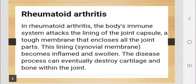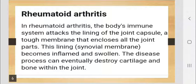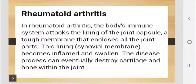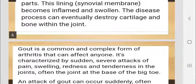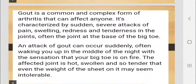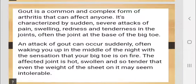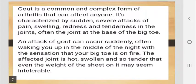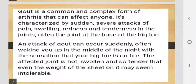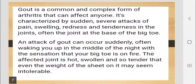When the immune system attacks the joint lining, all the parts found inside the joint become inflamed and swollen, as a result of which the entire joint — including bones and cartilage — gets destroyed. The third skeletal disorder is gout, the most common and complex form of arthritis.